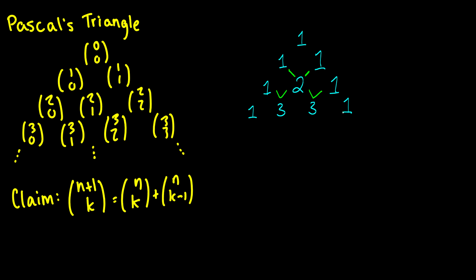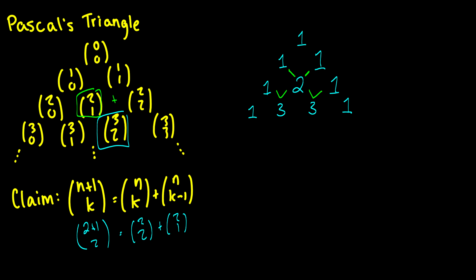The outside will always be 1. We have the claim that (n+1) choose k equals n choose k plus n choose (k-1). So for example, 3 choose 2, written as (2+1) choose 2, equals 2 choose 2 plus 2 choose 1, which we can see is exactly what we have in the triangle. It turns out that if you break apart the formulas and find an equivalent formula between the two, this holds.